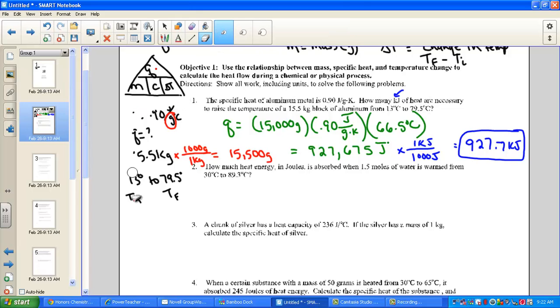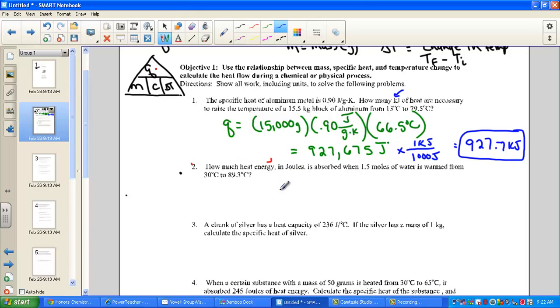Let's go on, reading a little bit for number two. How much heat energy in joules is absorbed? So again, absorbing heat means endothermic, when 1.5 moles of water is warmed from 30 to 89.3. How much heat? So again, our target is Q. M stands for mass. We have a little mole map work to do. M is not mole number, it's mass number.